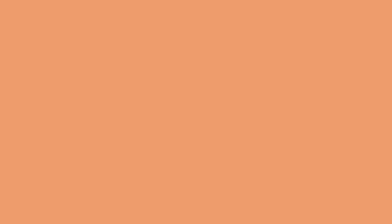The stock price at which a convertible bond can be exchanged for shares of common stock is called the conversion price.